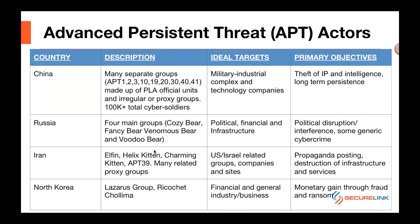Russia also has a number of groups — named after bears: Cozy Bear, Fancy Bear, Venomous Bear, and Voodoo Bear, reflecting Russia's national symbol. Their targets are different — they're after influence operations, looking to get into political organizations, possibly voting systems, and financial infrastructure, affecting the mood and politics in countries they're operating in. Many affiliated groups are Russian mafia connected to the government and are simply out to make money through cybercrime.